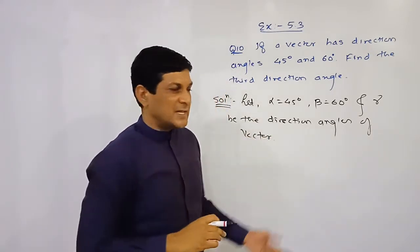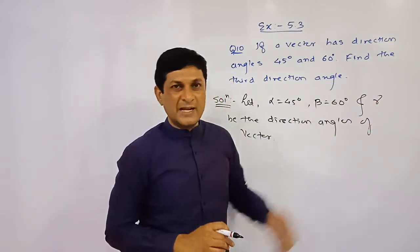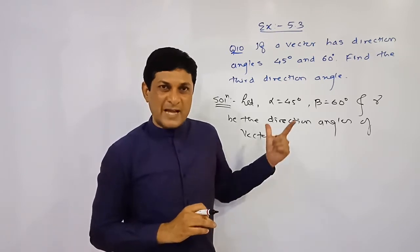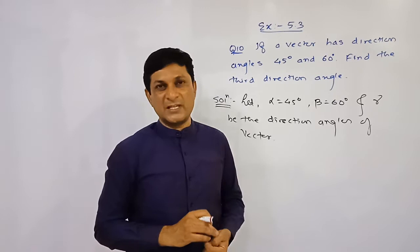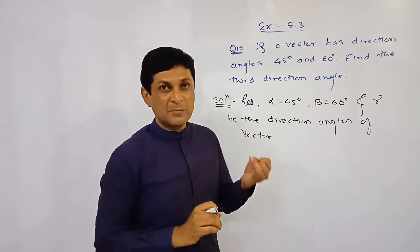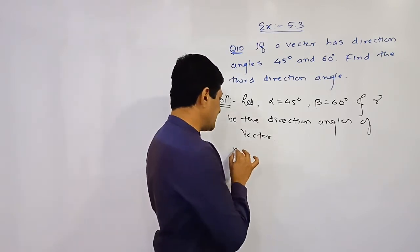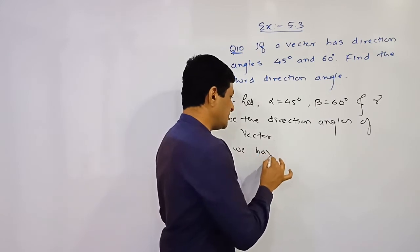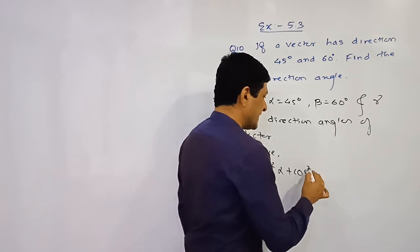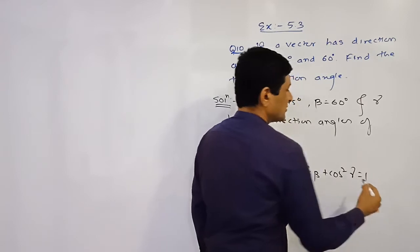Two angles are given and we must find the third direction angle. We have already seen that if direction angles are known, their direction cosines cos α, cos β, cos γ satisfy the condition: cos²α + cos²β + cos²γ = 1. We will use this condition here.